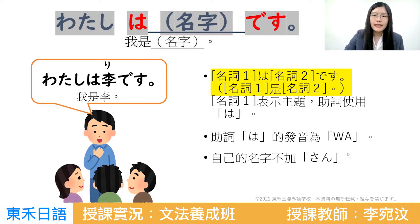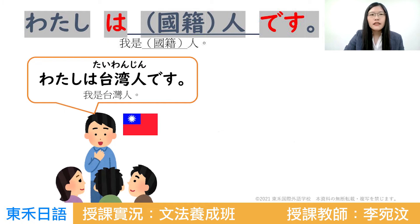那介紹別人的話，當然可以加上さん。さんは先生・小姐という意味です。下一個是「私は何何国籍です」という意味で，私は台湾人です，可以介紹說我自己是台灣人。